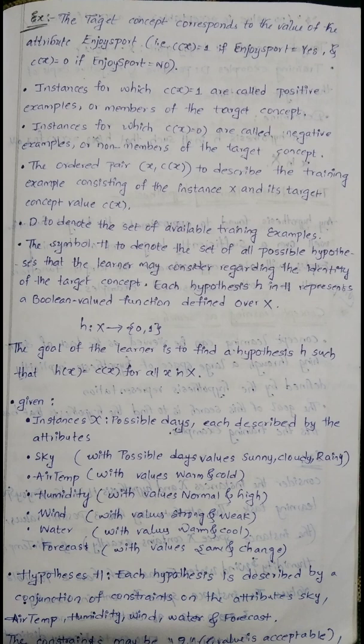The ordered pair ⟨x, c(x)⟩ describes the training example consisting of the instance x and its target concept value c(x). D denotes the set of available training examples. The first training example is the first. D and N are 4.